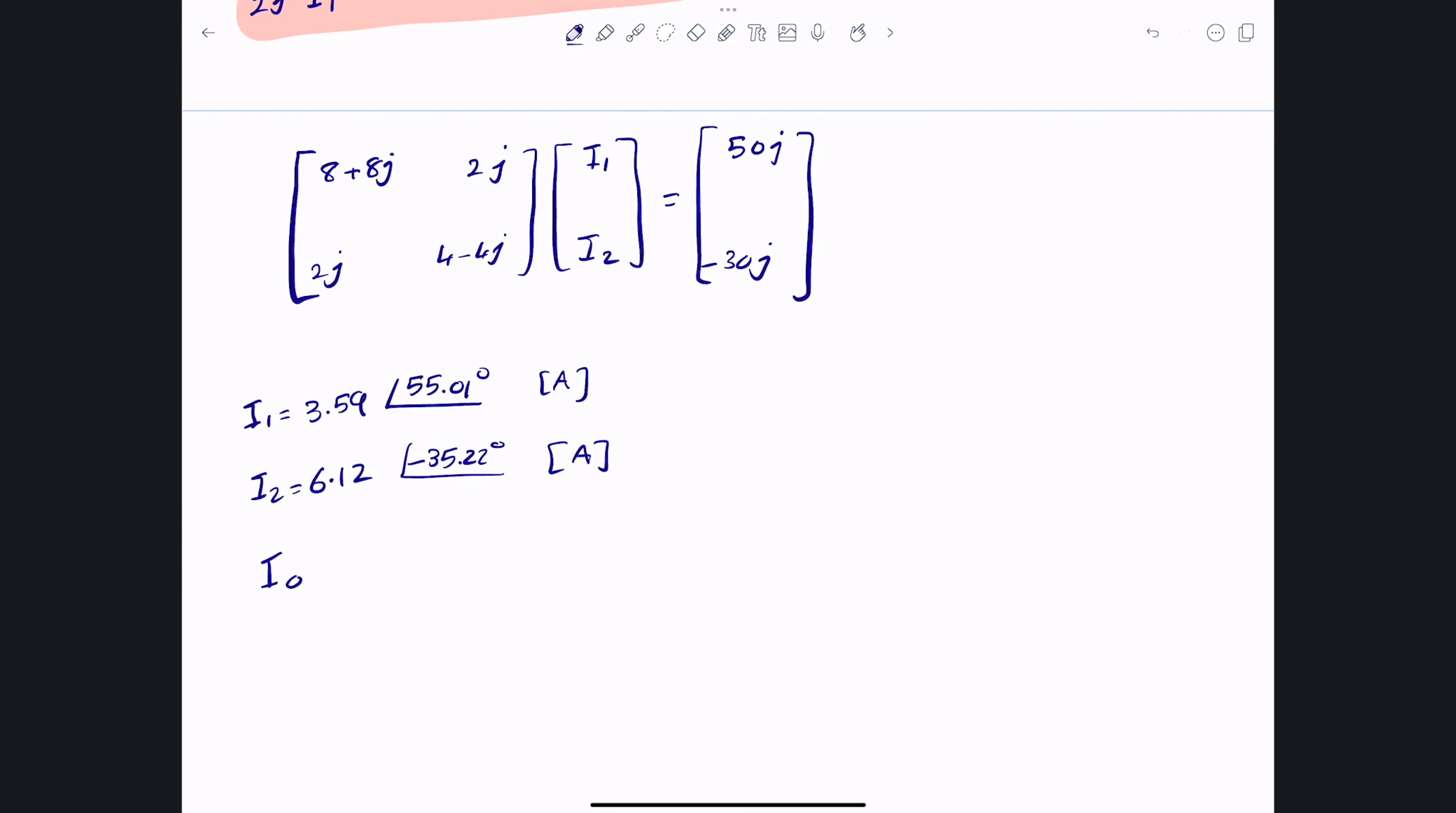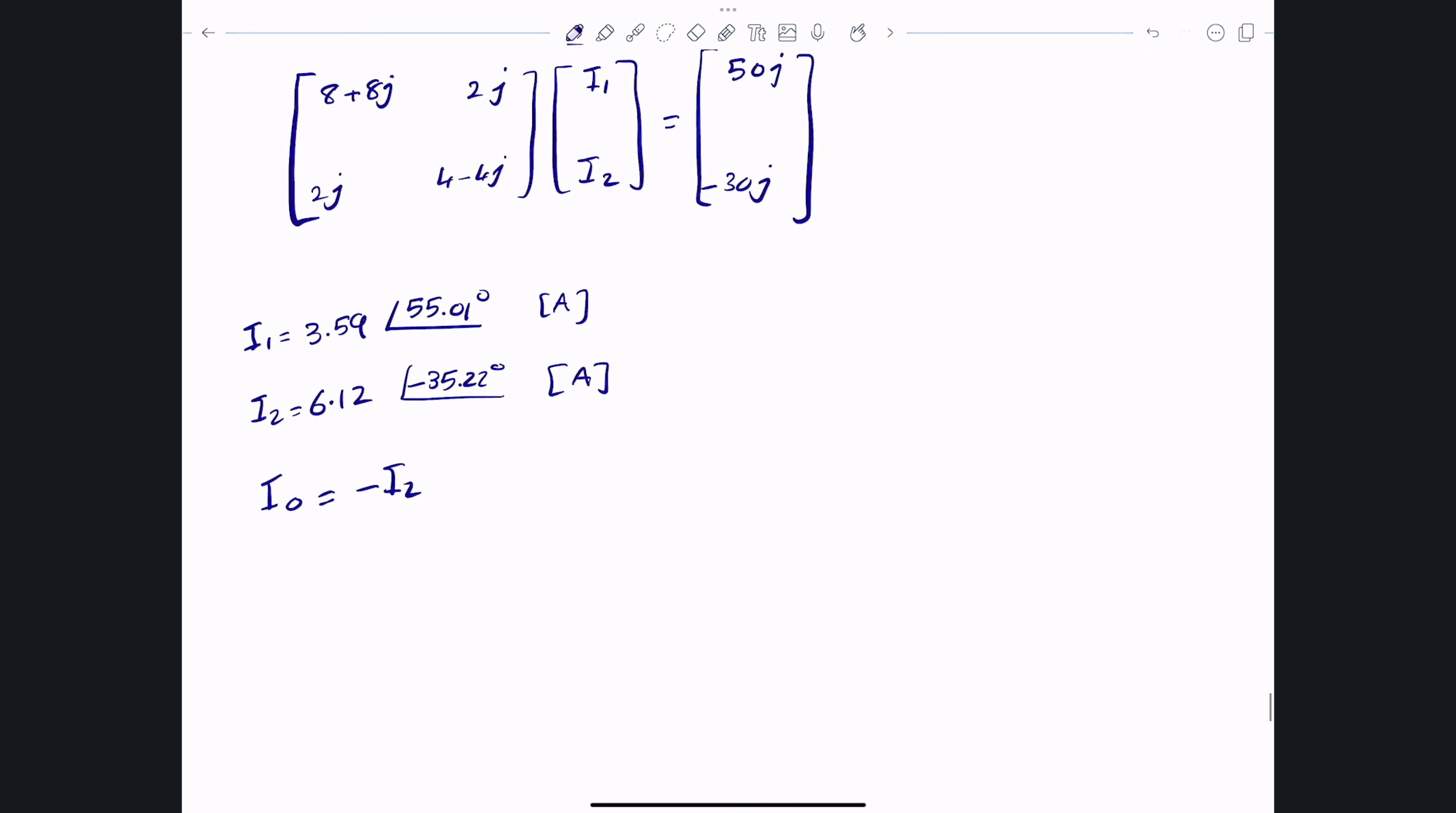Taking a look at this particular circuit, I0 and I2 are opposite of each other, so I can just simply write that I'm looking for I0 which is negative I2. Remember we're dealing with complex numbers so you can't just tell me it's negative 6.12, this isn't how it works.